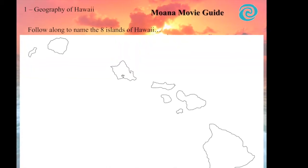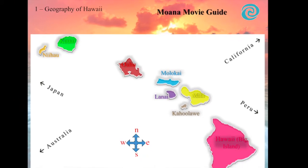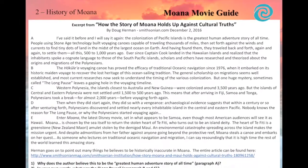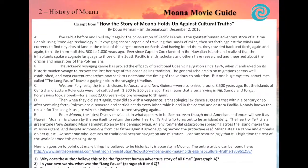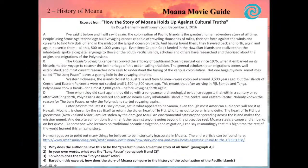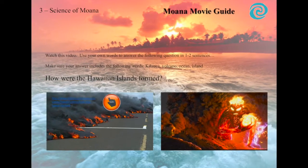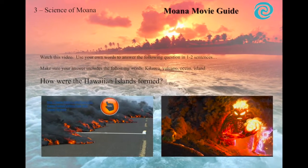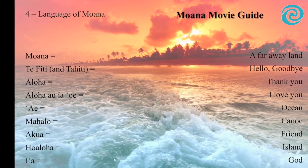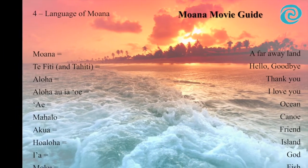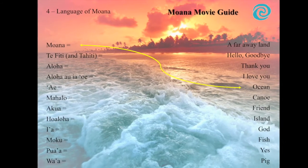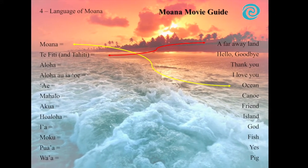One: a geography lesson, such as locating the islands of Hawaii. Two: a history lesson, such as the colonization of the Pacific islands and the so-called Long Paz, a 2,000-year break from voyaging. Three: a science lesson about how volcanoes and other forces work to form islands. Four: a language lesson, since many Hawaiian and Polynesian words are used. For instance, Moana means ocean, and Te Fidi means a far-off land.